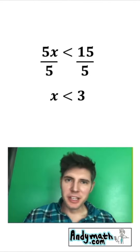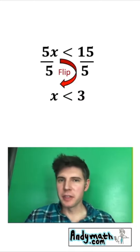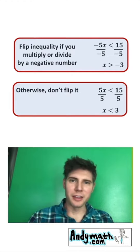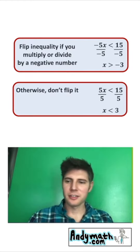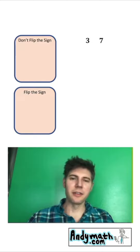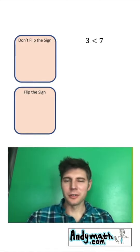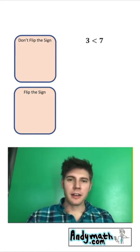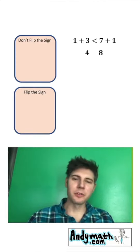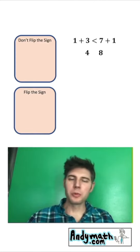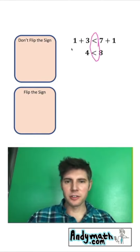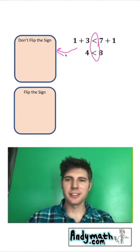Somebody asked: don't you need to flip the inequality? You could just memorize these rules, but I wanted to show examples of why they're the case. We'll fill out a 'don't flip the sign' and a 'flip the sign' chart. Starting with 3 and 7 — 7 is bigger. If I add 1 to both sides, 1 plus 3 is 4, and 7 plus 1 is 8. The 8 is still bigger. We did not flip the sign, so I'll add addition to the 'don't flip' list.